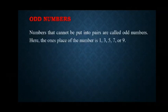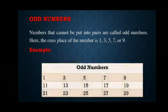Now, let's discuss about odd numbers. Numbers that cannot be put into pairs are called odd numbers. Here, the 1's place of the number is 1, 3, 5, 7 or 9. Few examples are 1, 3, 5, 7, 9, 11, 13 and so on.